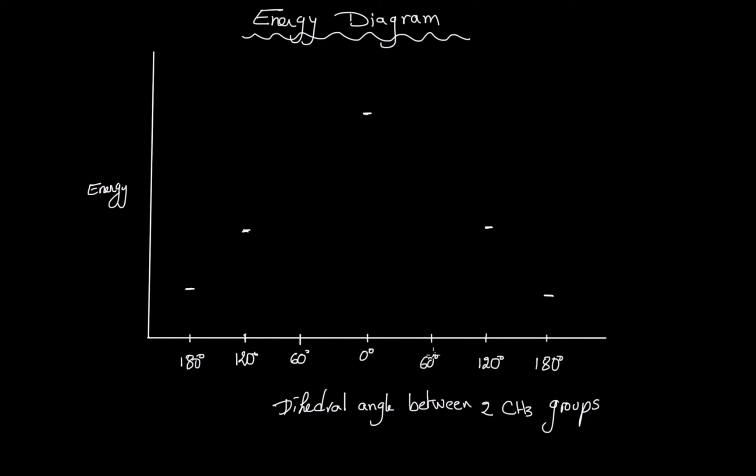Now for the other staggered gauche conformations, we said they are more energetic than 180 but less energetic than 120, so I'll put two marks in here.